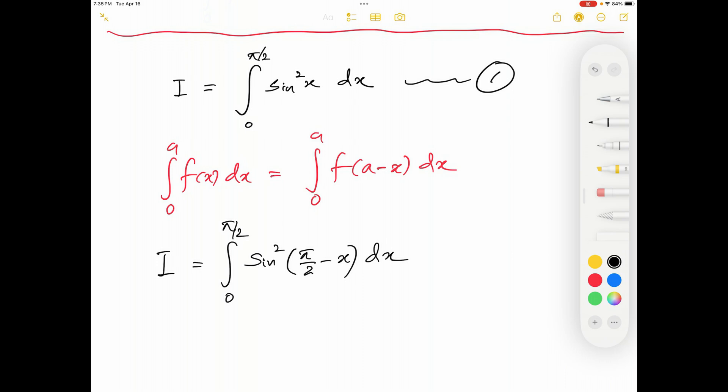Now what is sin of pi over 2 minus x? That is equal to cosine x. Now this is a second order function. Therefore, this integral i should be equal to from 0 to pi over 2 cosine squared x dx.